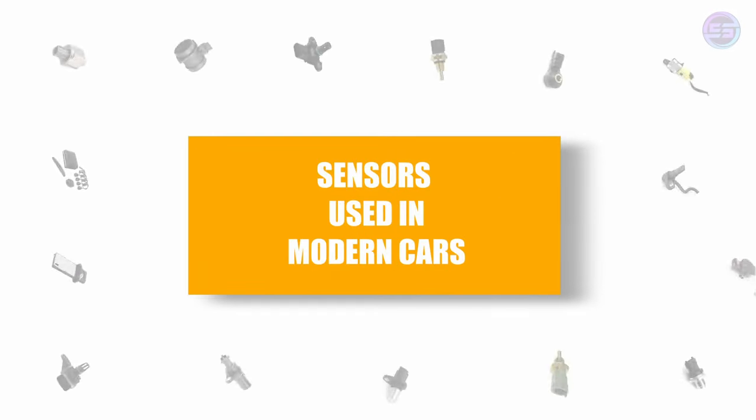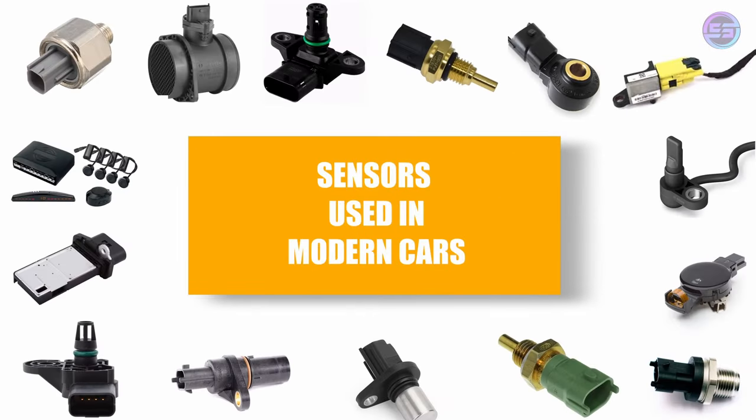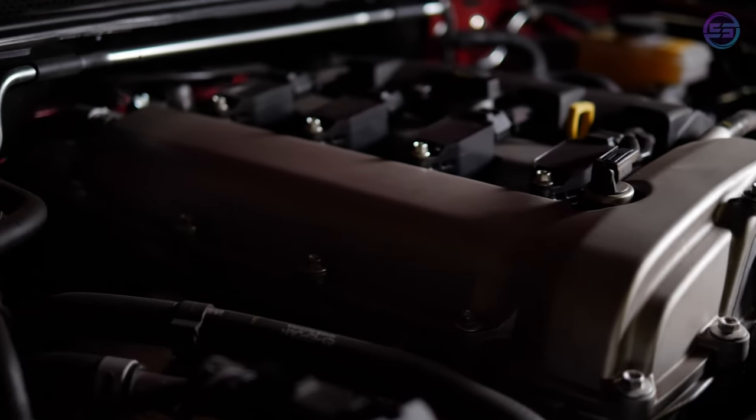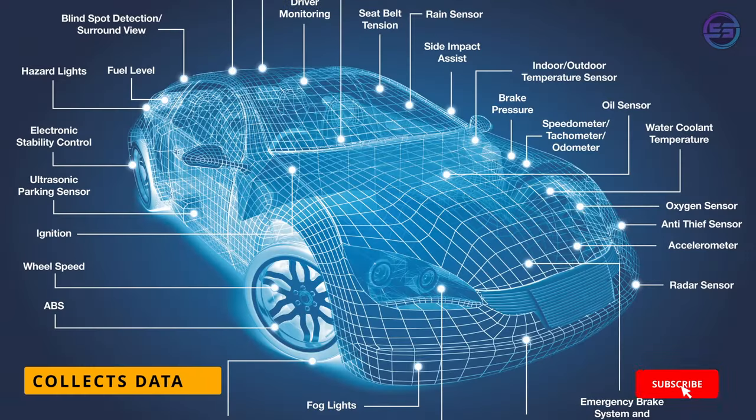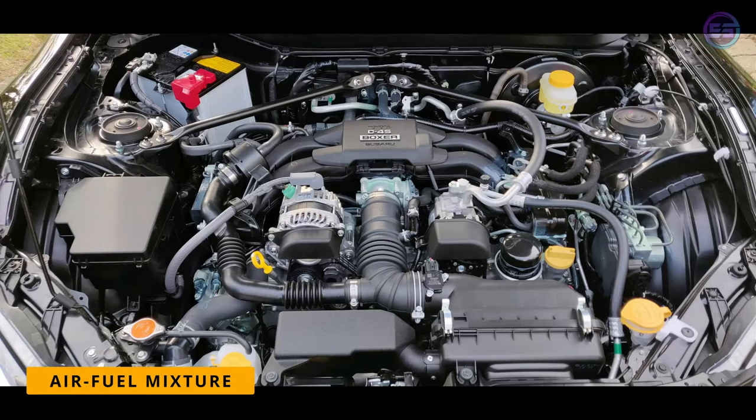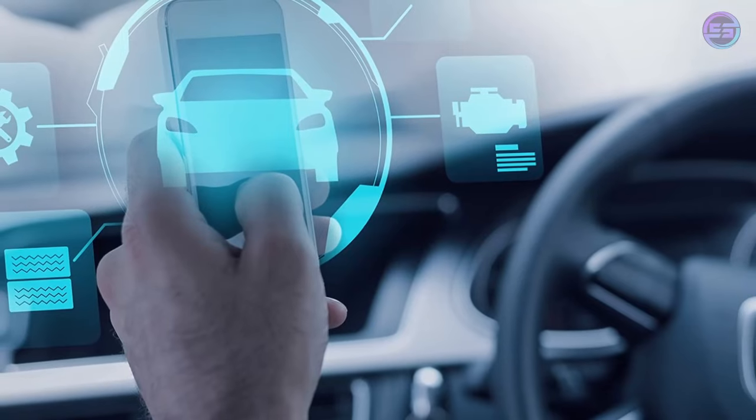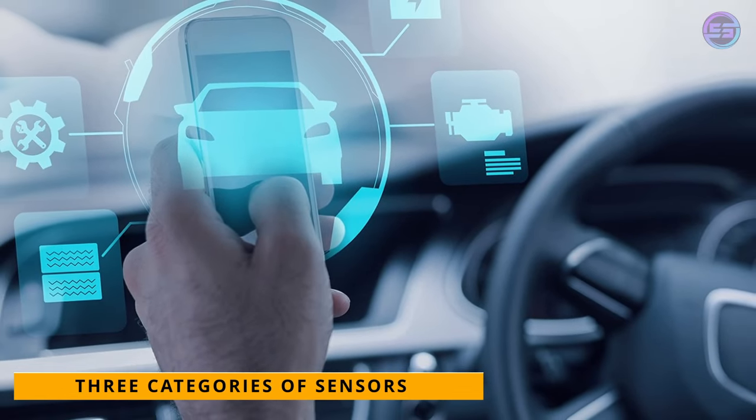In this video we will see about all the sensors used in modern cars. Most modern car engines are fitted with an array of different sensors which gather data to calculate a perfect fuel mixture for the best fuel economy and best performance in all situations. Sensors are classified into three categories.